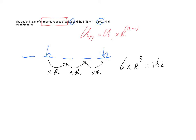If you rearrange that — 162 divided by 6 and you take the cube root — you're going to find that r equals 3. So 6 times 3 is 18, 18 times 3 is 54, and indeed 54 times 3 is 162.